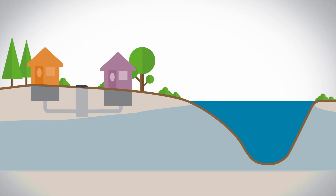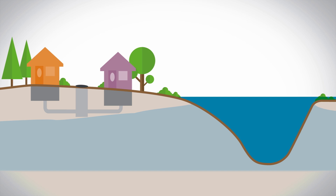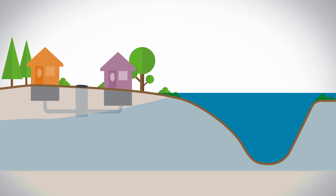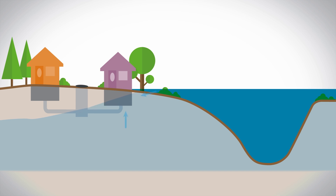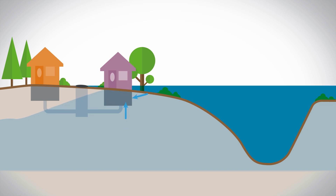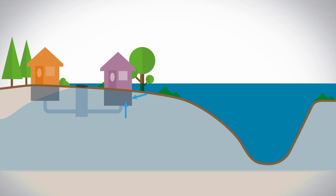Groundwater is important because it can enter basements. Basements are not impermeable — they're not meant to hold out water — so naturally, if groundwater is elevated, it will enter the basement. That's why sump pumps are extremely important and effective, because they collect that groundwater, preventing it from rising above the floor of the basement.